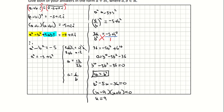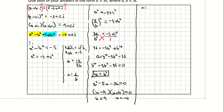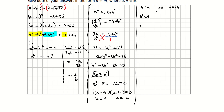So therefore u equals positive 9 and u equals negative 4. Since u equals b squared, we have b squared equals 9, giving b equals plus or minus 3. And b squared equals negative 4, giving b equals plus or minus 2i. So those are my two sets of values for b.